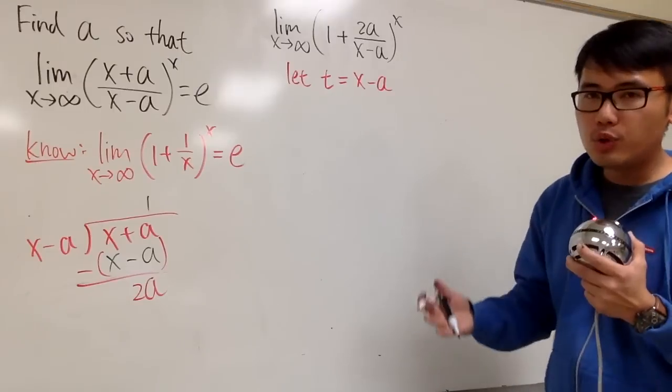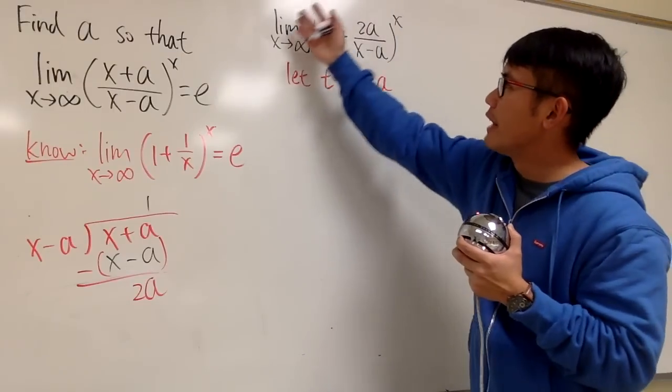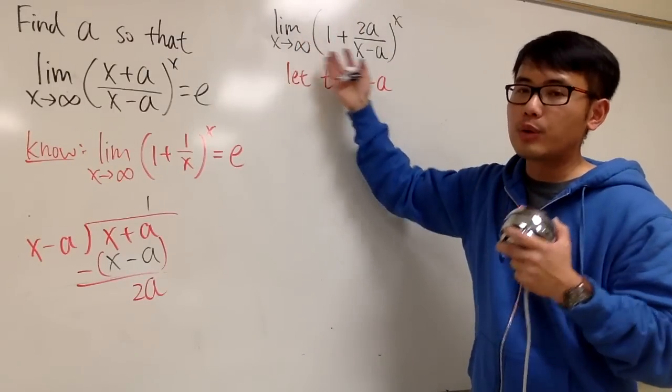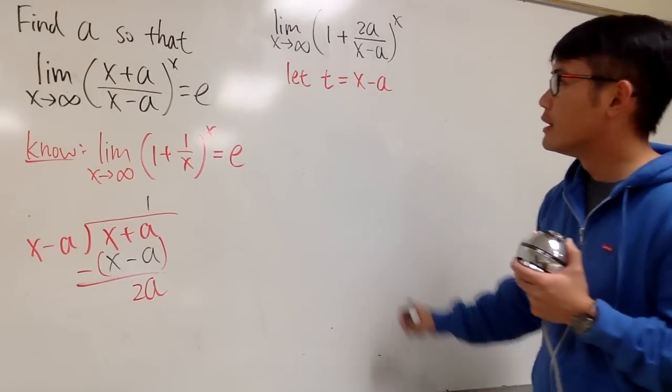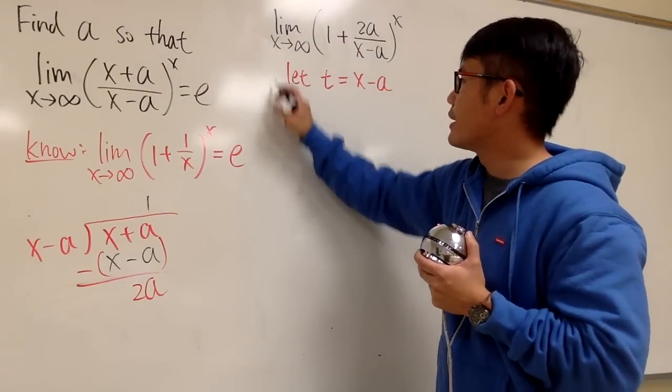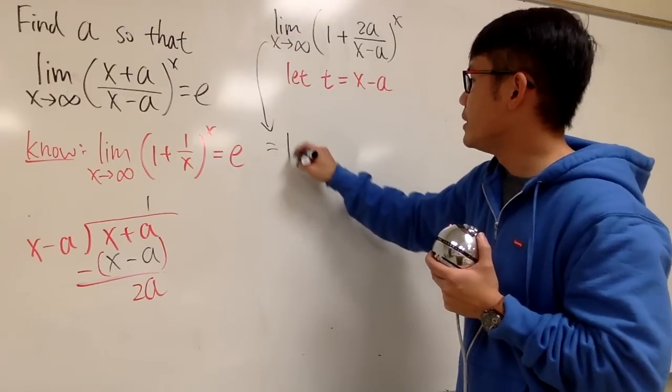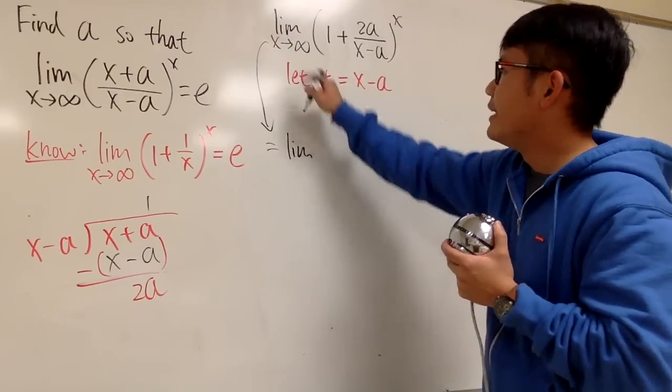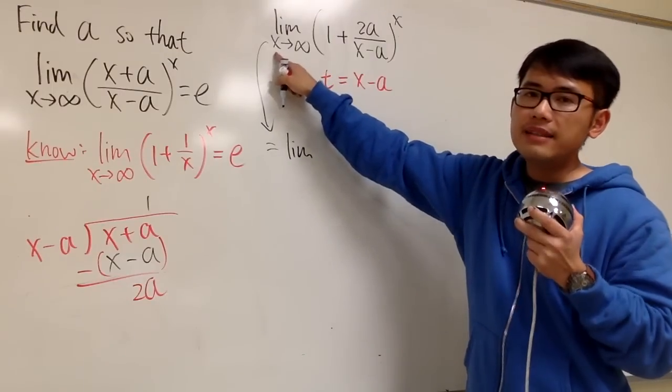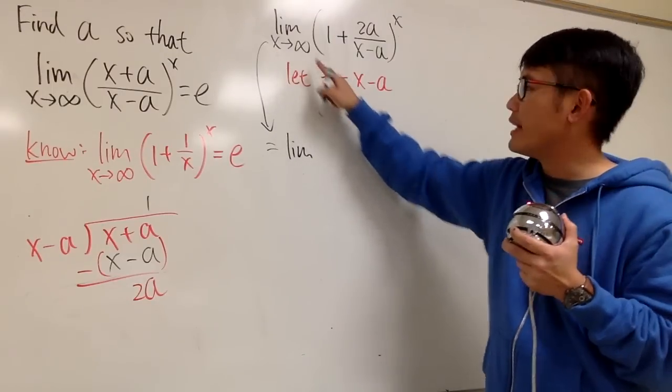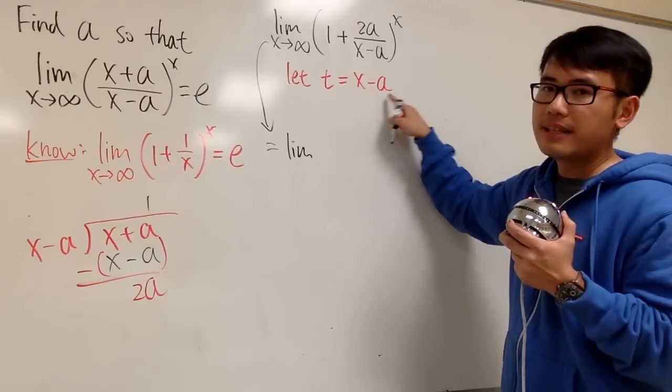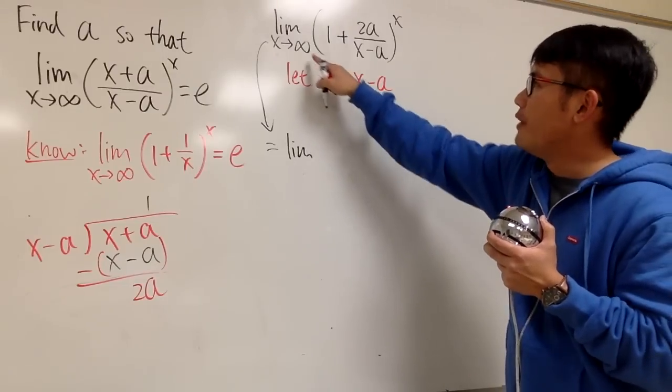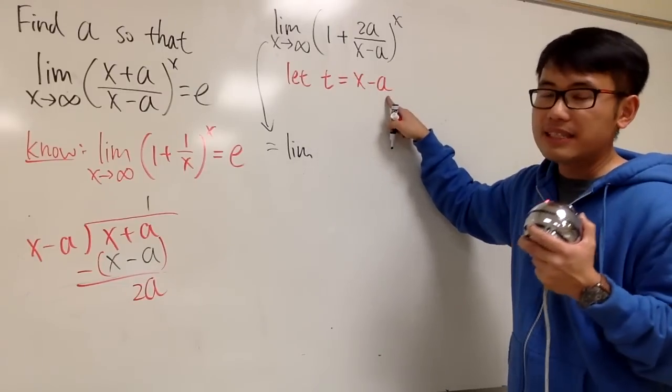And the way that we are going to do it is, I will just say that another variable, I will just say t, equals to x minus a. And what I would like to do is, I would like to take this limit. I will rewrite everything in terms of t. No more x. Earlier you see, x is approaching to infinity. But then, if you look at the connection of t and x, x minus a is t. When x is infinity, a is finite.